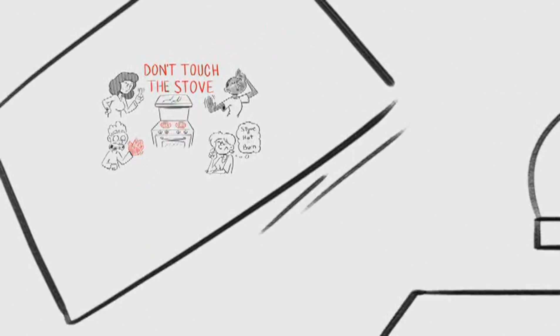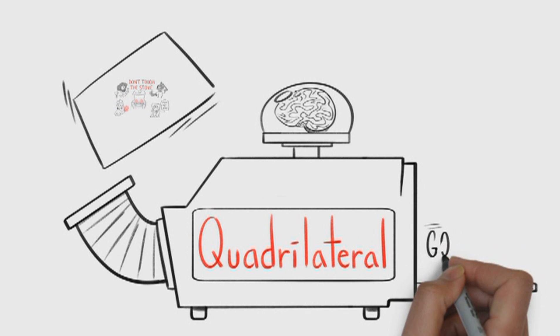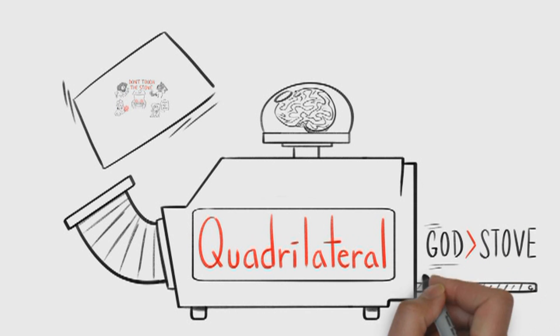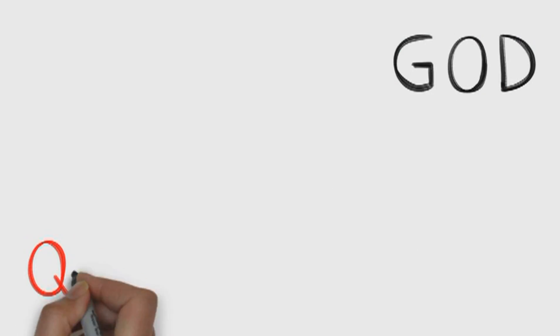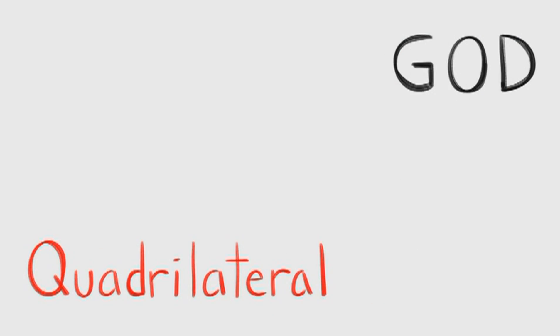The Quadrilateral takes this process and applies it to our quest to understand God, which is a lot harder than understanding a stove. Because God is really big and complicated and hard to understand sometimes.